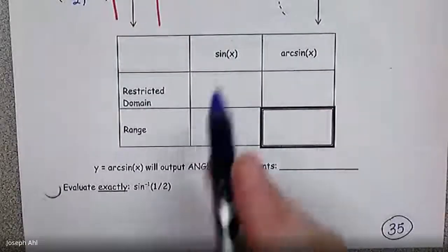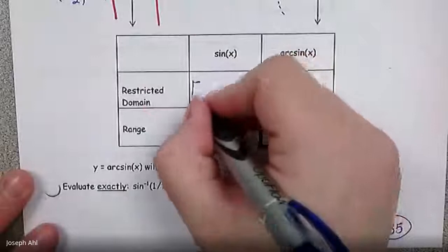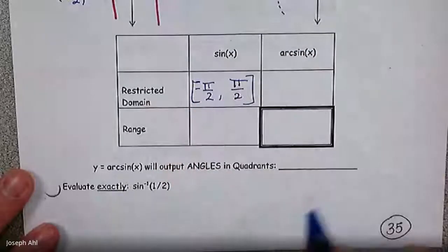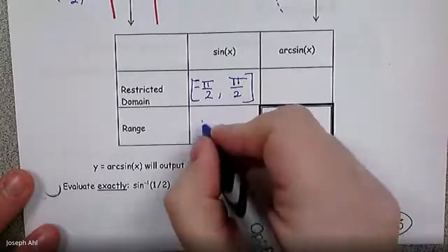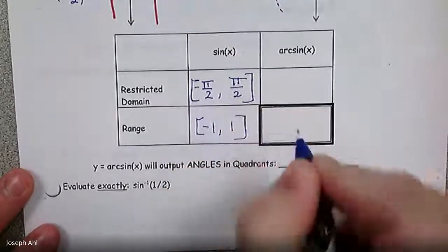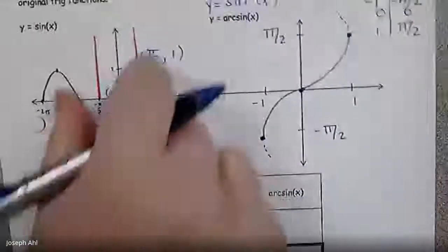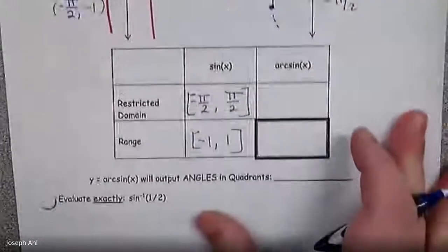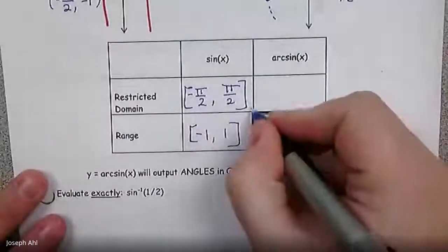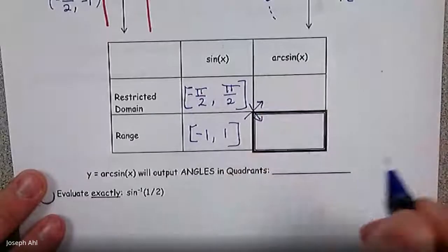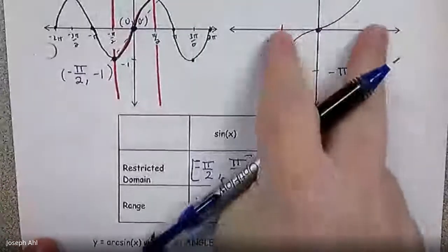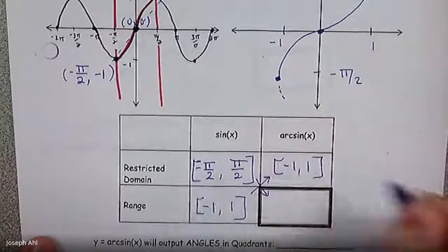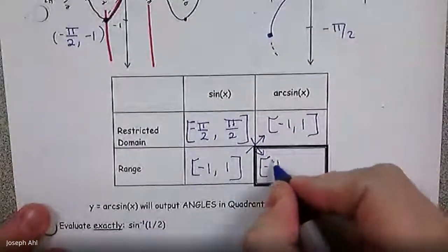The domain we restricted for sine x was −π/2 to positive π/2, and the range over that interval is −1 to 1. When I find arcsine of x — the inverse — those two things get switched. So the domain of arcsine is from −1 to 1, and the range is from −π/2 to positive π/2.